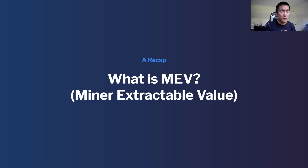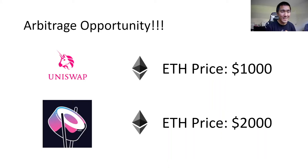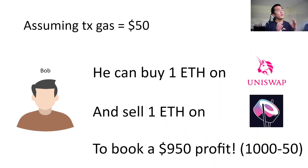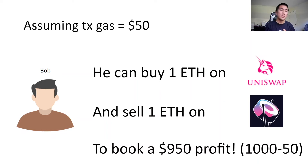What is MEV? What is miner extractable value? The best way to explain MEV is with an example. Let's say there's an arbitrage opportunity in the price of Ethereum — a price discrepancy between Uniswap and Sushiswap where the price differs by $1,000. Bob, an arbitrager, can buy Ethereum on Uni and sell it on Sushi and book a $950 profit, assuming the transaction gas is $50 to do this arbitrage.